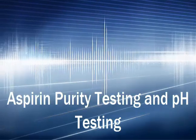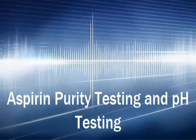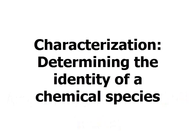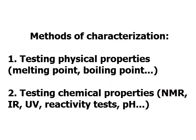This video deals with testing aspirin purity, which falls under the umbrella of characterization — determining the identity of a chemical species. There are a couple of ways to do this: one is to use a physical test like testing the melting point or boiling point, and we can also do chemical tests like NMR, infrared, UV, reactivity tests, or testing the pH.